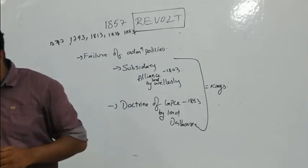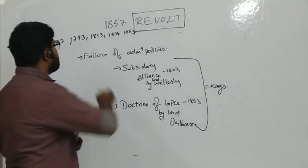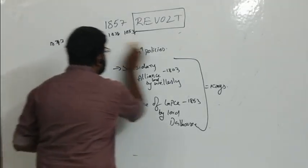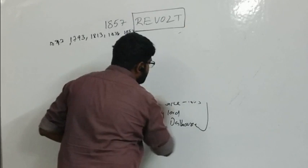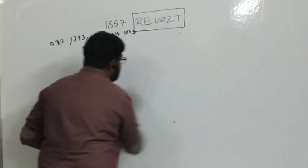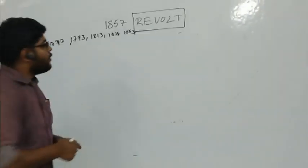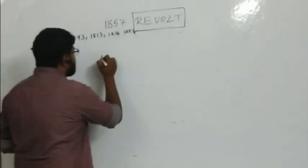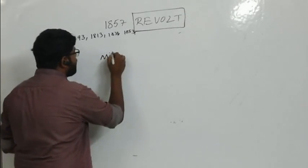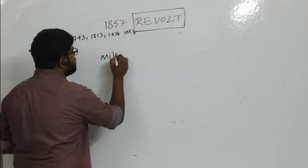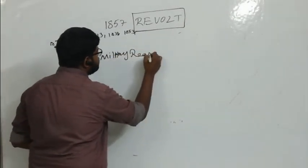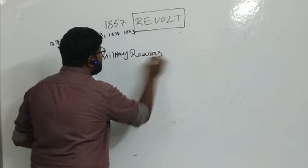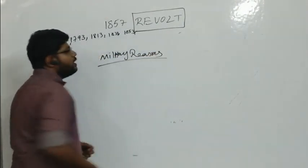So three important sections of society were affected: one is farmers, second is zamindars, and third is kings. Now, what is the third reason for the 1857 revolt? The third reason involves military reasons.